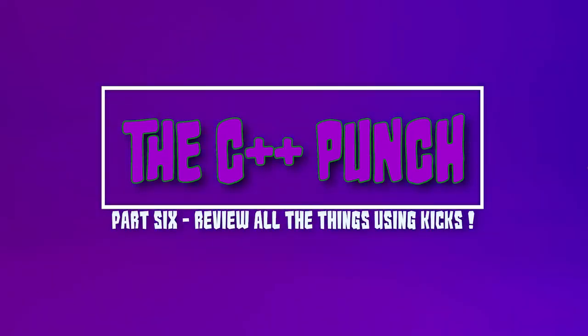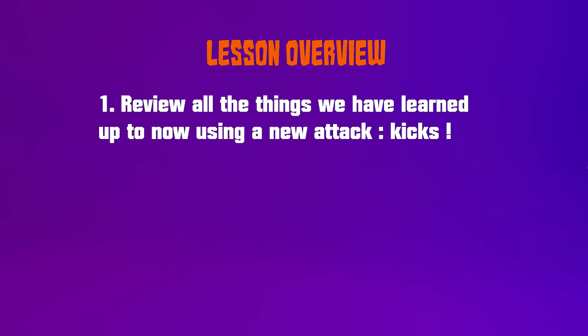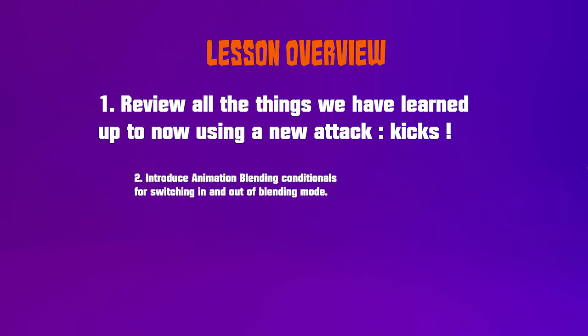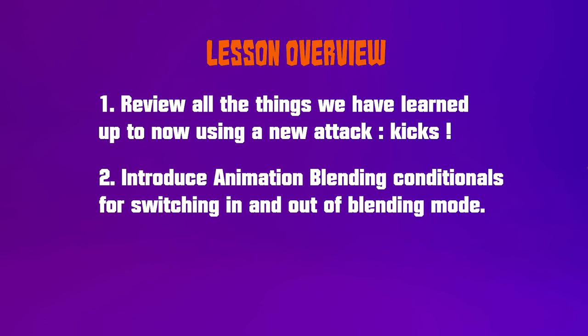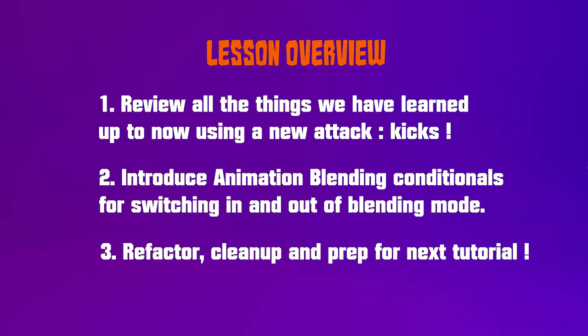Today we're going to resume our player character series, picking up where we last left off by introducing a new attack type in the form of a kick. We're going to use all of the knowledge we learned in the player character series as well as the C++ fundamental series and add this new attack, hook it up to our right mouse button, and execute it in the game. We'll also look at animation blending, because kicks are a full body motion and won't play nicely with the way we split up our punches from our lower half when running around. Lastly, we'll start looking at cleaning up our code, organizing it in meaningful ways, and prepping for our next set of tutorials.